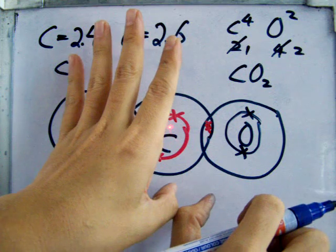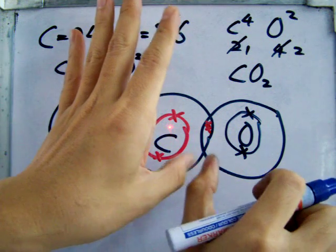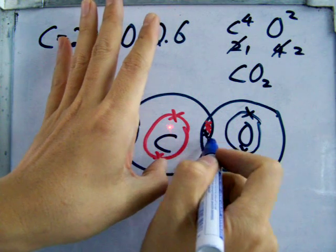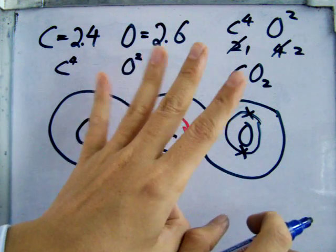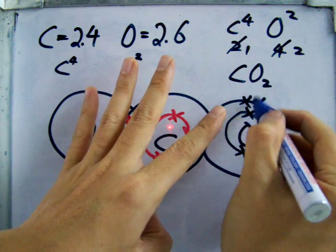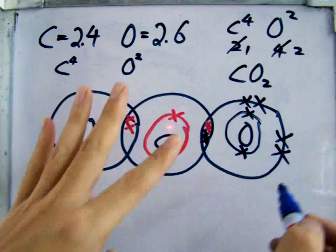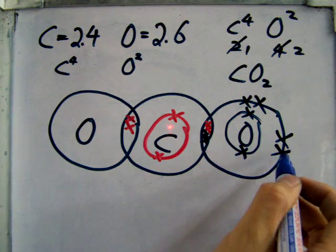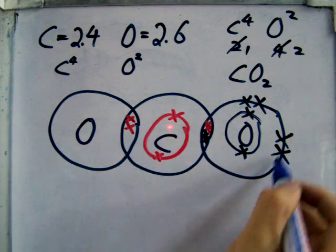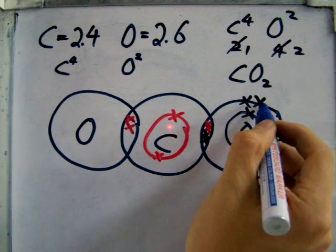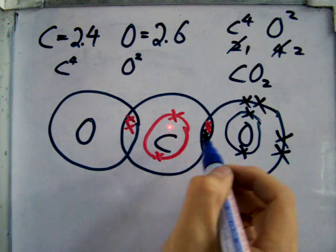So this two, contribute will be inside here. And then four will be outside. One, two, three, four. To check if it's correct or not, very simple. You just calculate how many electrons in this circle. One, two, three, four, five, six, seven, eight. Must be eight. Sure.